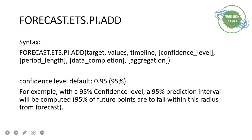The syntax for FORECAST.ETS.PI.ADD requires: the target (specific row/column), existing values (Y-axis data), existing timeline (X-axis data), and a confidence level — which is mandatory. The default confidence level is 0.95, meaning 95% of future points are predicted to fall within the computed interval.